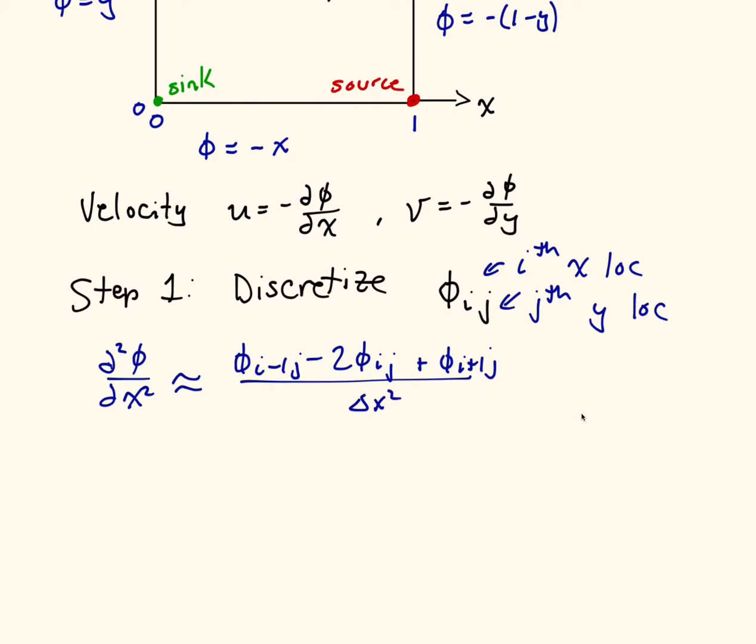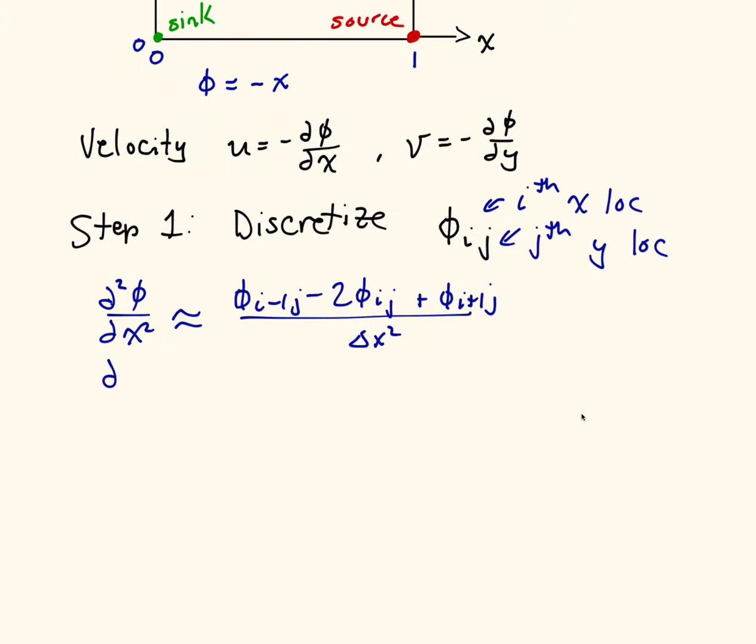You'll notice that we're varying the i-index. And we're varying the i-index because we want to know how φ changes in the x-direction. The second derivative of φ with respect to x is going to tell us how φ changes in the x-direction. Partial squared φ partial y squared is going to be exactly the same thing, but we're going to vary the j-index. So we're going to have φ_i,j-1 minus 2 φ_ij plus φ_i,j+1, and this is all divided by Δy squared.